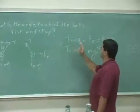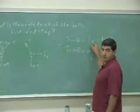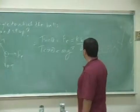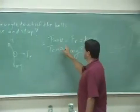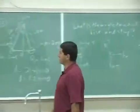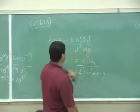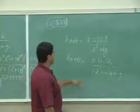T sine theta equals the electrical force when it stops, which is k q1 q2 over d squared. We divided these two equations and got tangent theta is k q1 q2 over d squared mg.